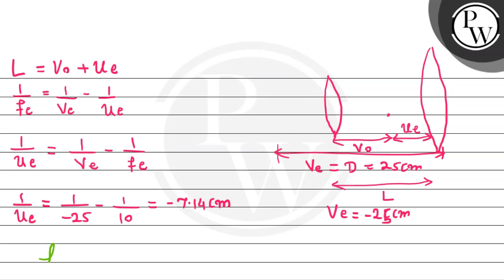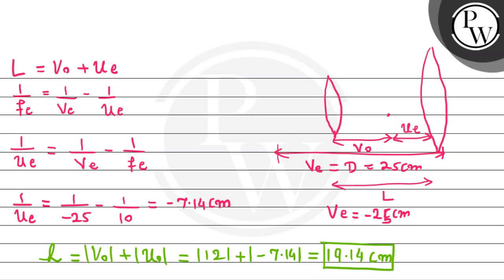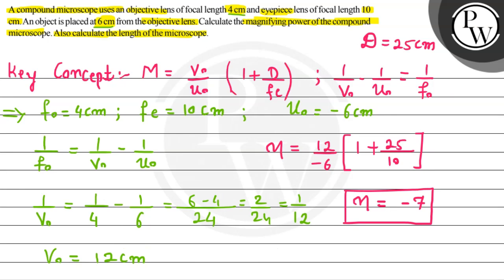Using the length formula: L equals modulus of v-naught plus modulus of u of E. v-naught is 12 cm and modulus of u of E is 7.14 cm. Adding these gives 19.14 cm. Therefore, the length of the compound microscope is 19.14 cm. The magnifying power and length have been found using the lens formula and the magnifying power formula of the compound microscope. I hope you understood it well — best of luck, thank you.